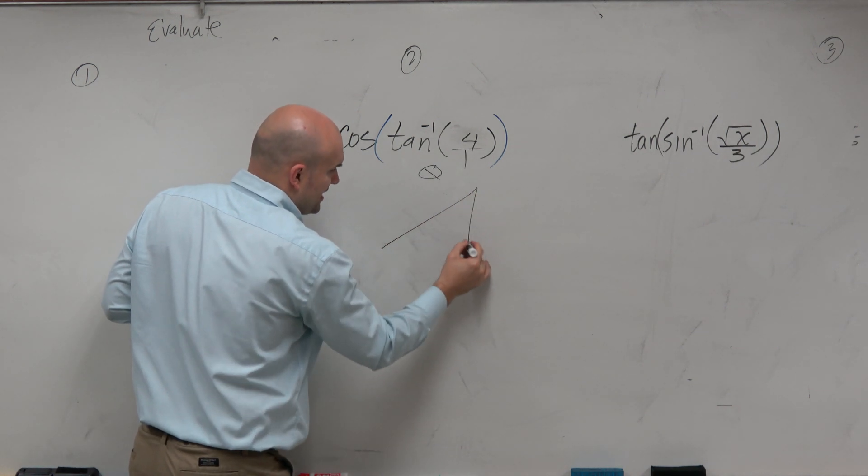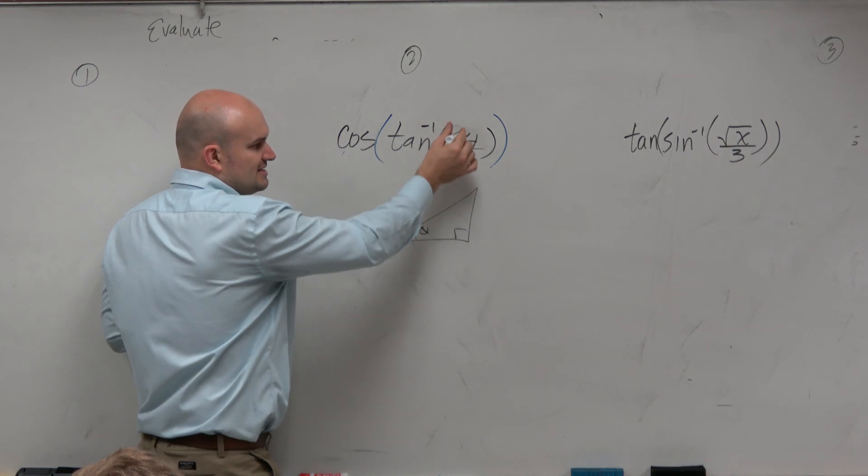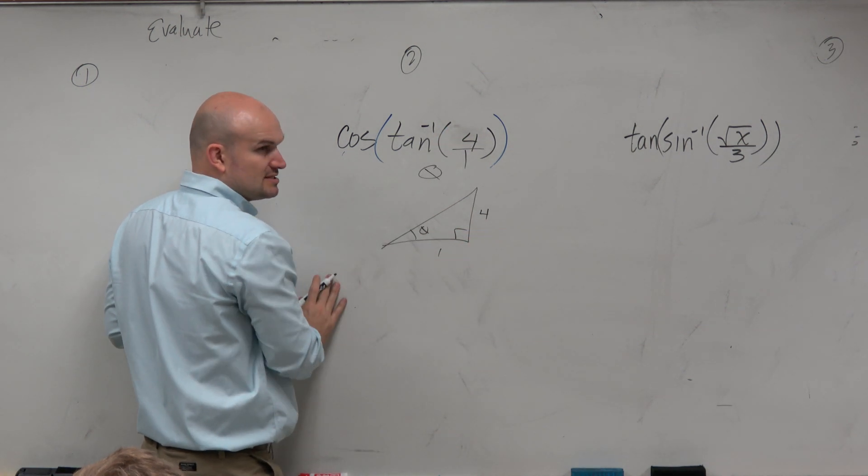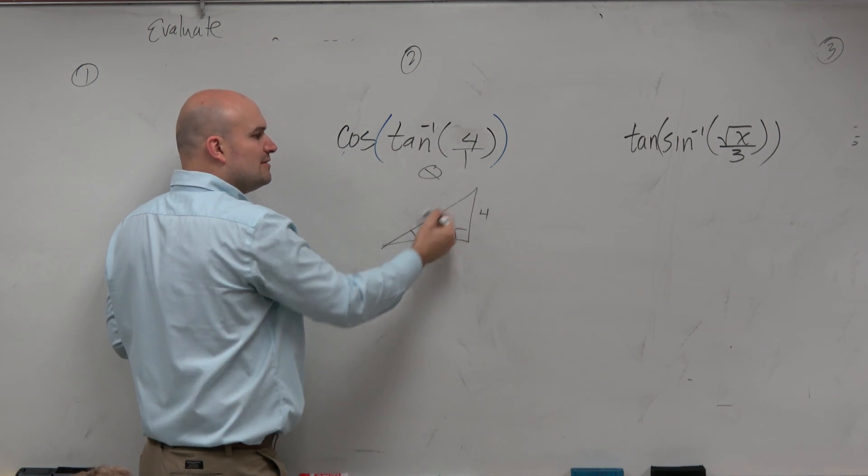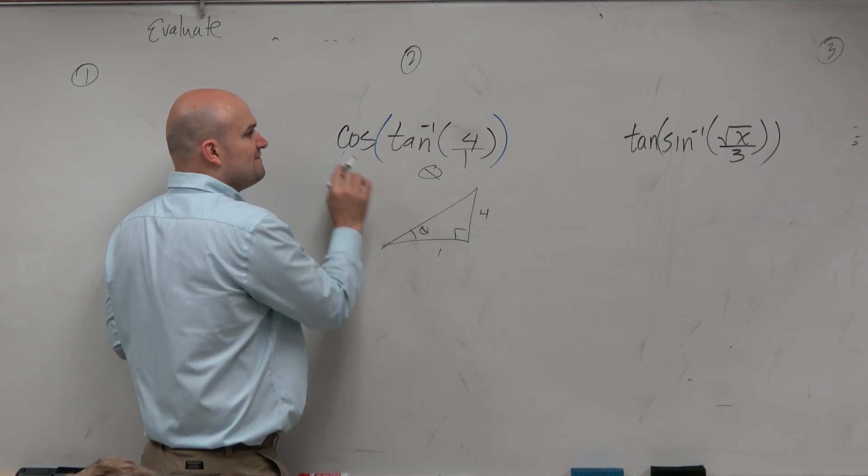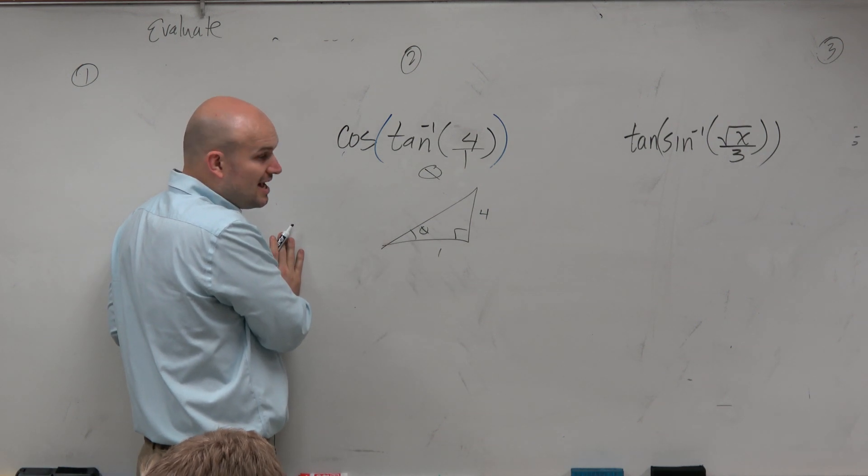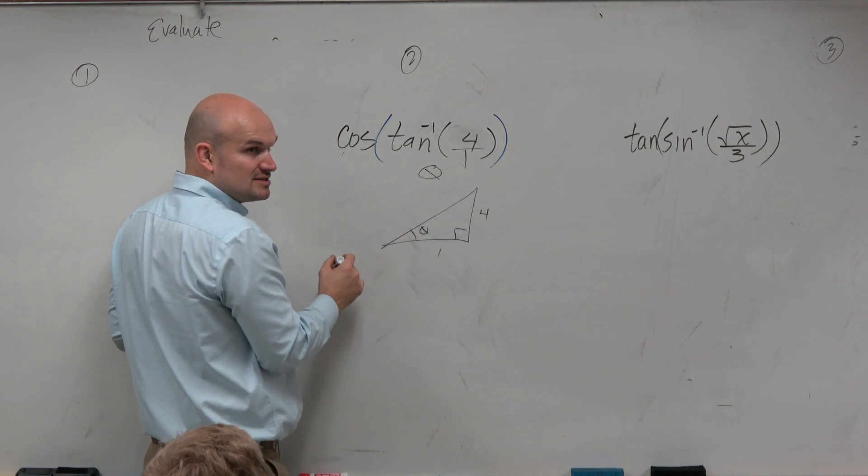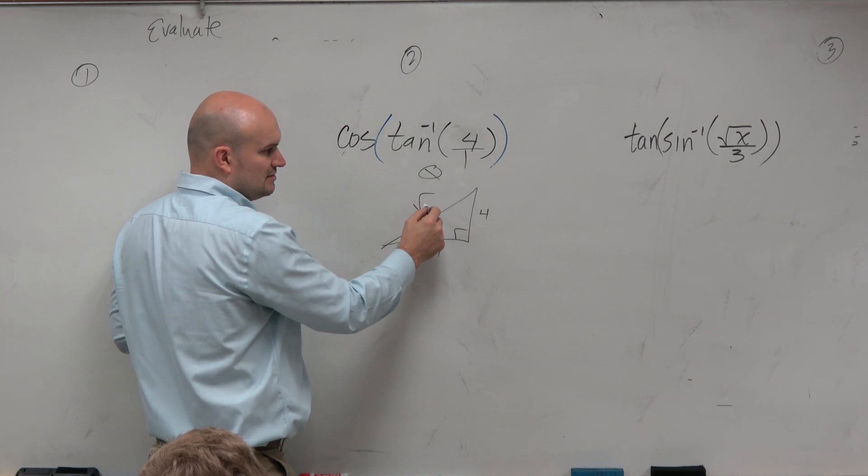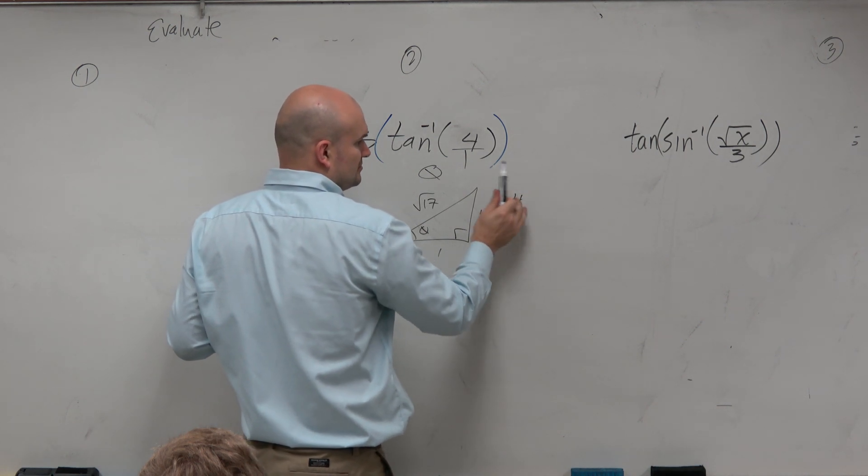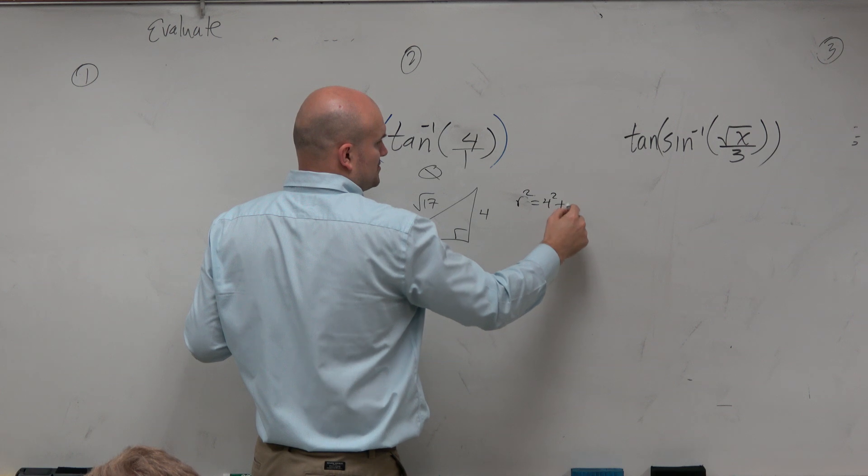Sure. So some angle theta, I have no idea what that angle is. Tangent would be opposite over adjacent. So by using this inside, I can create this triangle. Now, do I have enough information now to find the cosine of whatever that angle is? Yeah, I just need to figure out what the hypotenuse is, right? Which hopefully you guys can figure out is going to be the square root of 17. Pythagorean theorem. r squared equals 4 squared plus 1 squared.